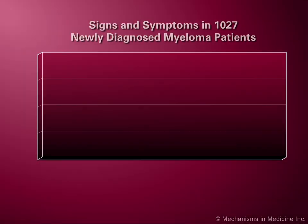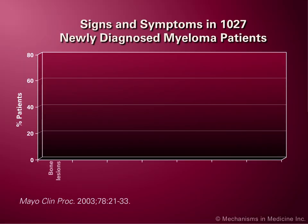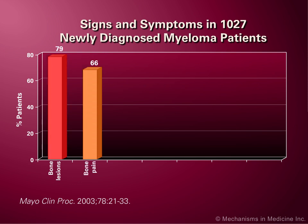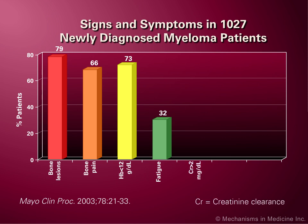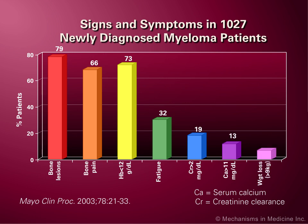Clinical diagnosis of active myeloma is based on at least three objective laboratory tests, as well as the presence of bone destruction, anemia, renal and nervous system dysfunction, and/or multiple severe infections. These symptoms vary and may exist in various combinations in newly diagnosed multiple myeloma patients.